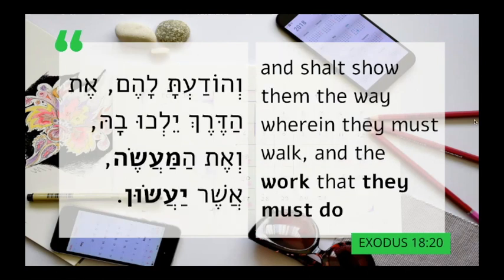And in this verse from Exodus 18, we have the noun ma'ase, meaning action, deed, or here work as a noun. And the verb ya'asun, which is the same as ya'asu, meaning they will do. This noun suffix is called the paragogic noun if you want to look it up — it doesn't change the meaning or the conjugation of the verb.